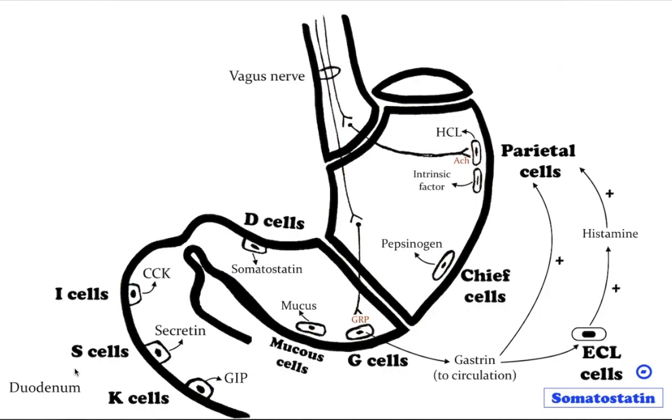S cells secrete secretin from the duodenum and jejunum and stimulate exocrine pancreatic secretion.